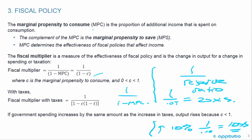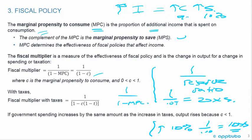The marginal propensity to consume is the proportion of additional income that is spent on consumption. If my income goes up, there are two things I can do with it: I can increase my consumption or I can increase my savings. The complement of the marginal propensity to consume is the marginal propensity to save. So if my income goes up and I'm a 10% saver, I would increase my consumption by 90%. If my income went up by $1,000, I would consume $900 more and save $100 more.